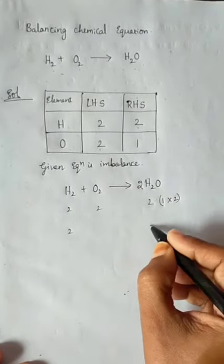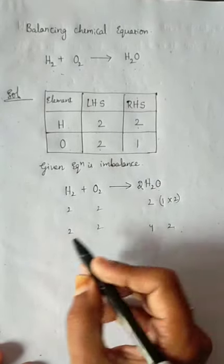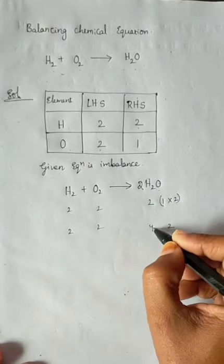2 hydrogens, 2 twos are 4 hydrogens, 2 oxygens. Now it becomes 2 oxygens. Again, this is not balanced.